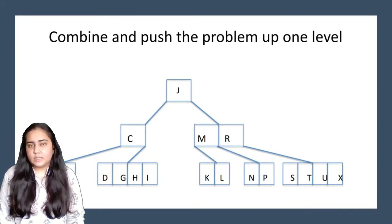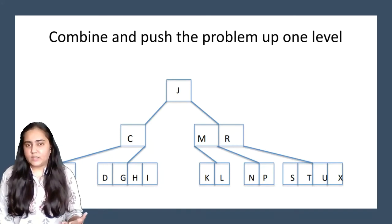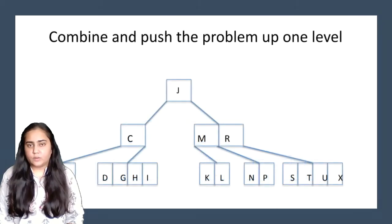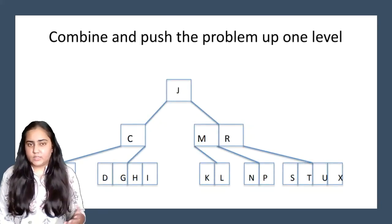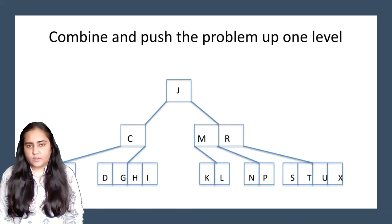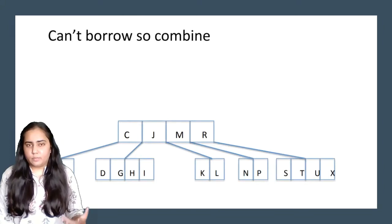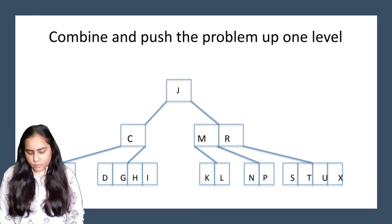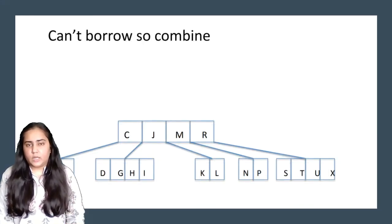After combining, the node with C has only one key, which is insufficient. We also cannot borrow from the right-hand side because that would leave only one key there. So we combine again: C, J, M, and R are all combined with J into one level — C, J, M, R. That's how deletion is performed in a B-tree.